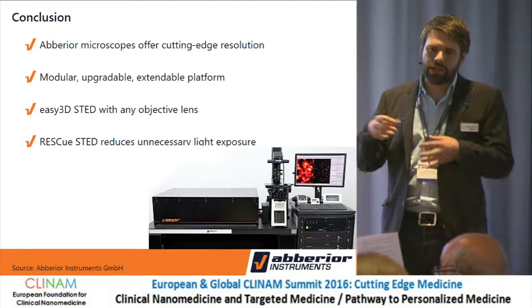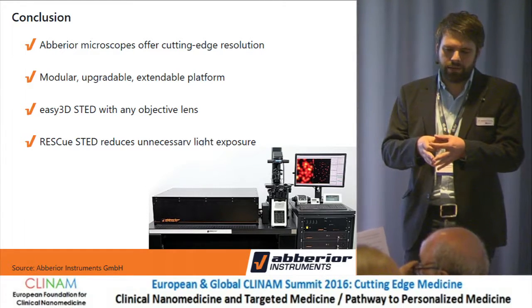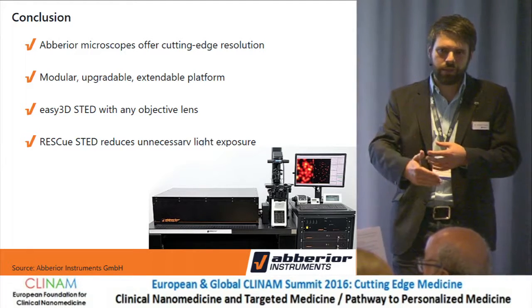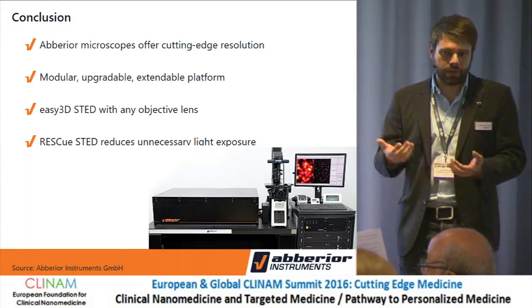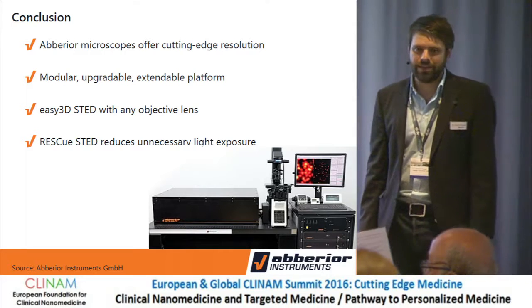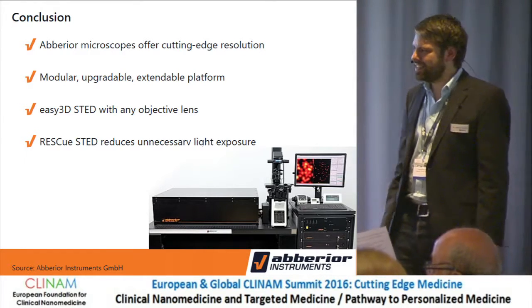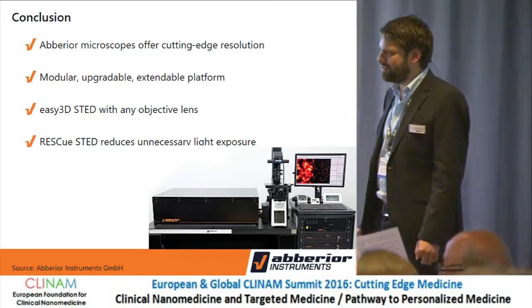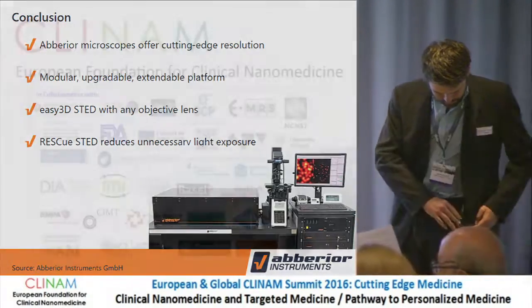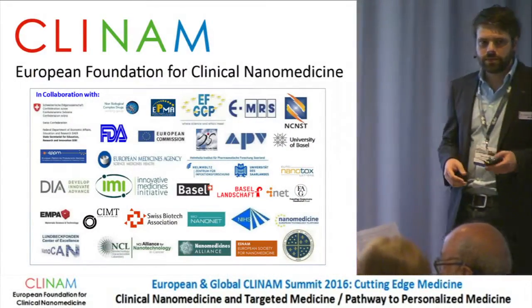And you need the ring shape — the donut — and this is done by putting a phase mask element in the beam to make a donut. — Right, to make a donut. — Thank you. — You're welcome. Okay, I see there's no more questions, and we have to continue to the last talk of our session. We thank the speaker again.